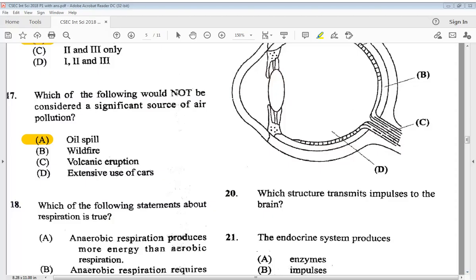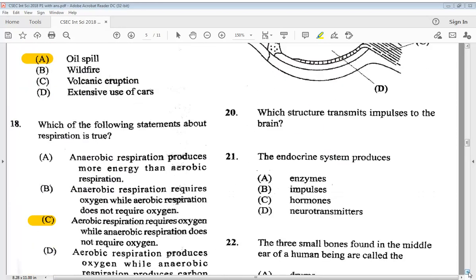21 says, the endocrine system produces A, enzymes, B, impulses, C, hormones or D, neurotransmitters. We know it is C, hormones.